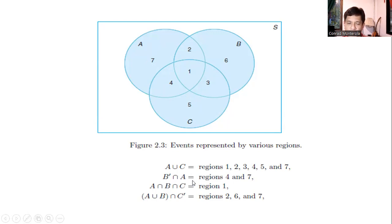B' intersection A. So if we say B', it's outside of B. That's 7, 4, 5. Then intersection with A. So the only one that is left common with A is only 7 and 4. Or 4 and 7.